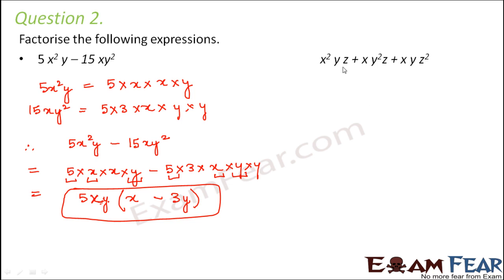Let's look at the second expression. It is x²yz + xy²z + xyz². Similarly, let's write each of them in factor form. So x²yz can be written as x×x×y×z.